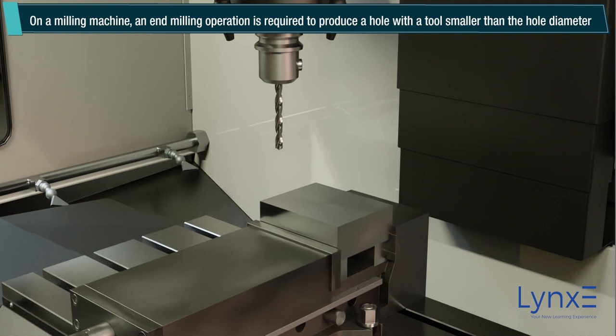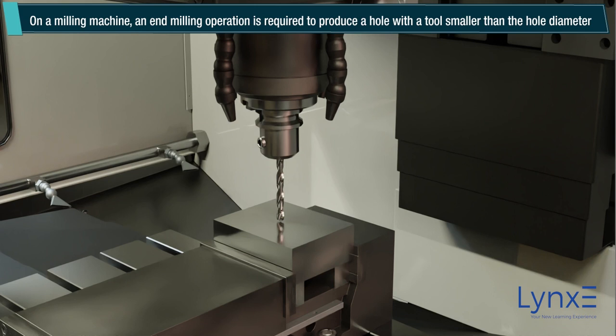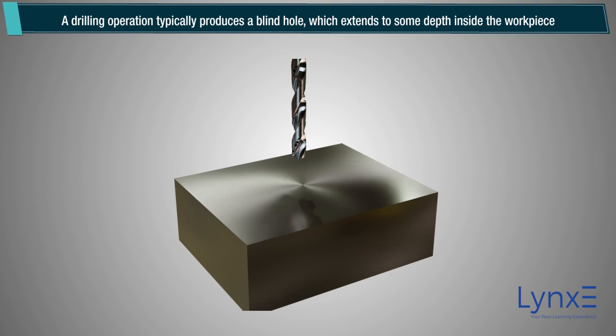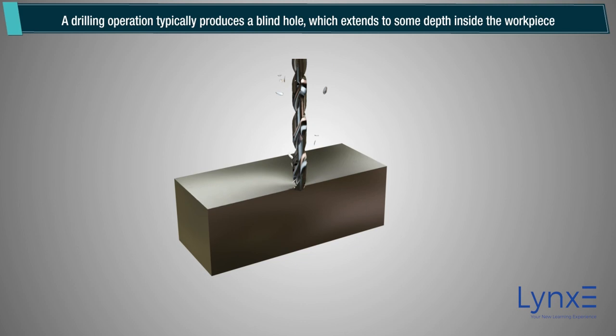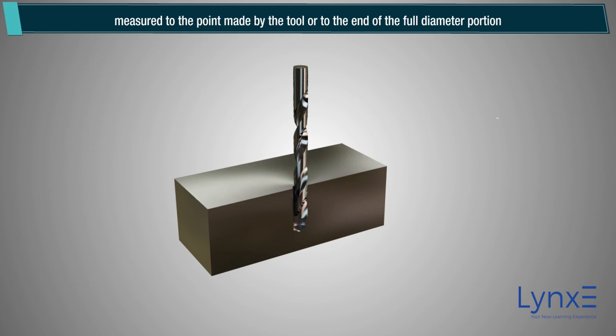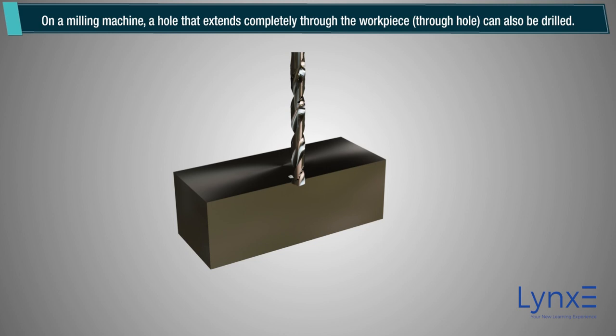On a milling machine, an end milling operation is required to produce a hole with the tool smaller than the hole diameter. A drilling operation typically produces a blind hole which extends to some depth inside the workpiece, measured to the point made by the tool or to the end of the full diameter portion. A hole that extends completely through the workpiece, called a through hole, can also be drilled on a milling machine.